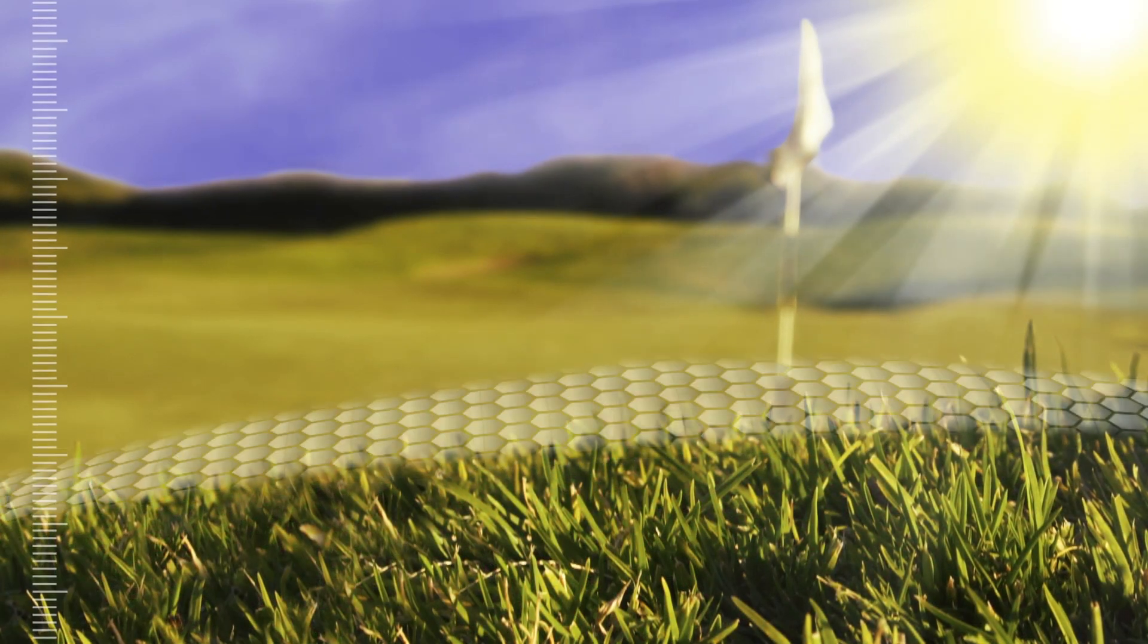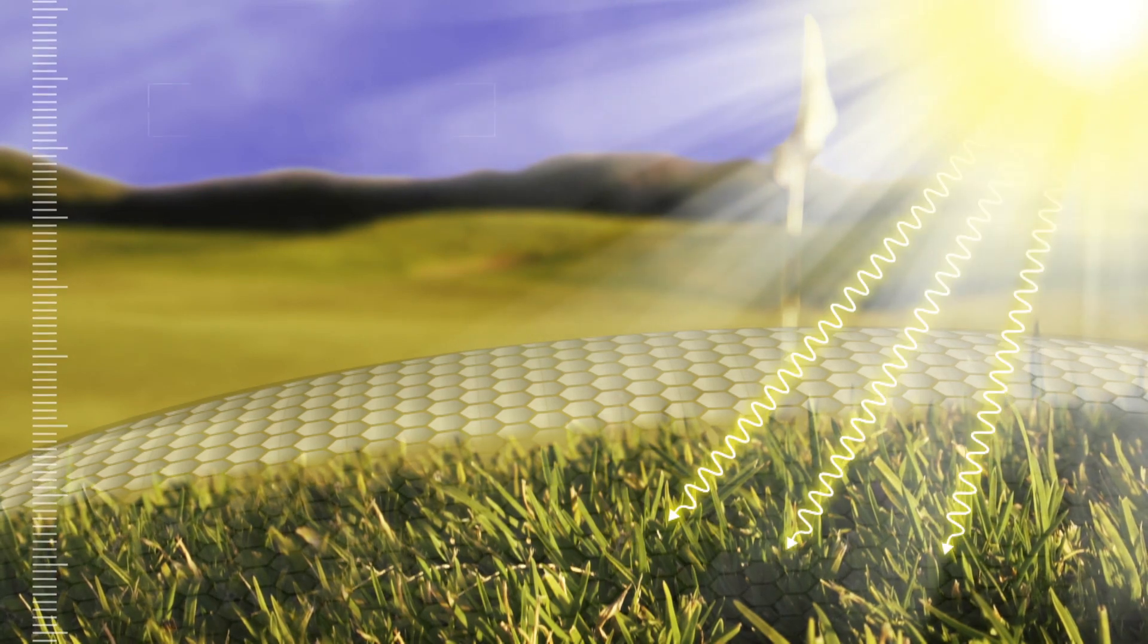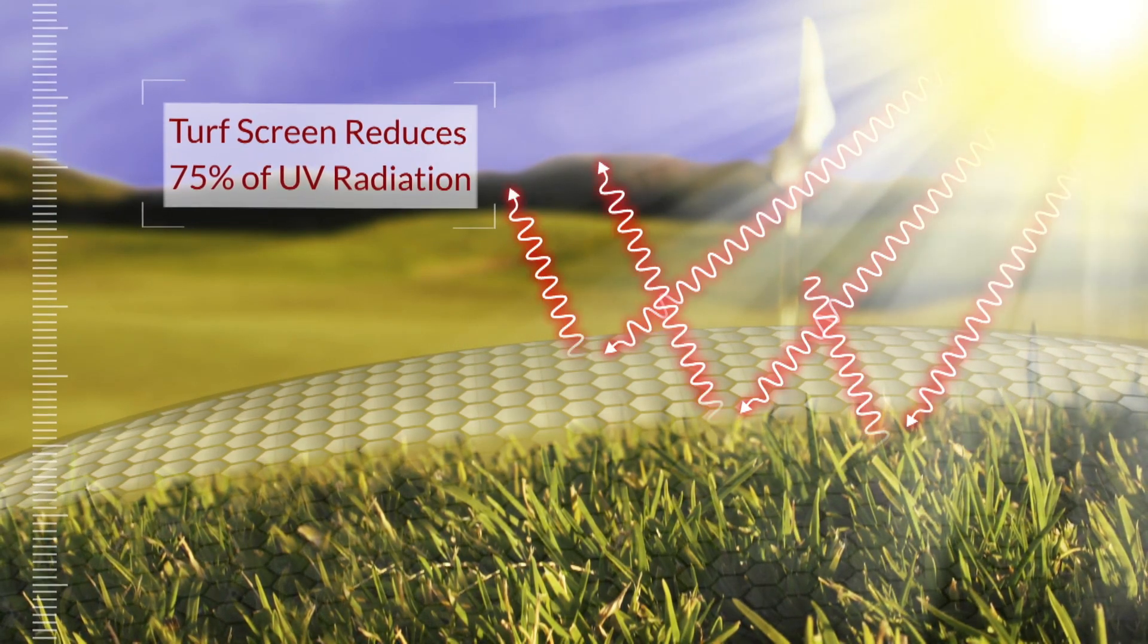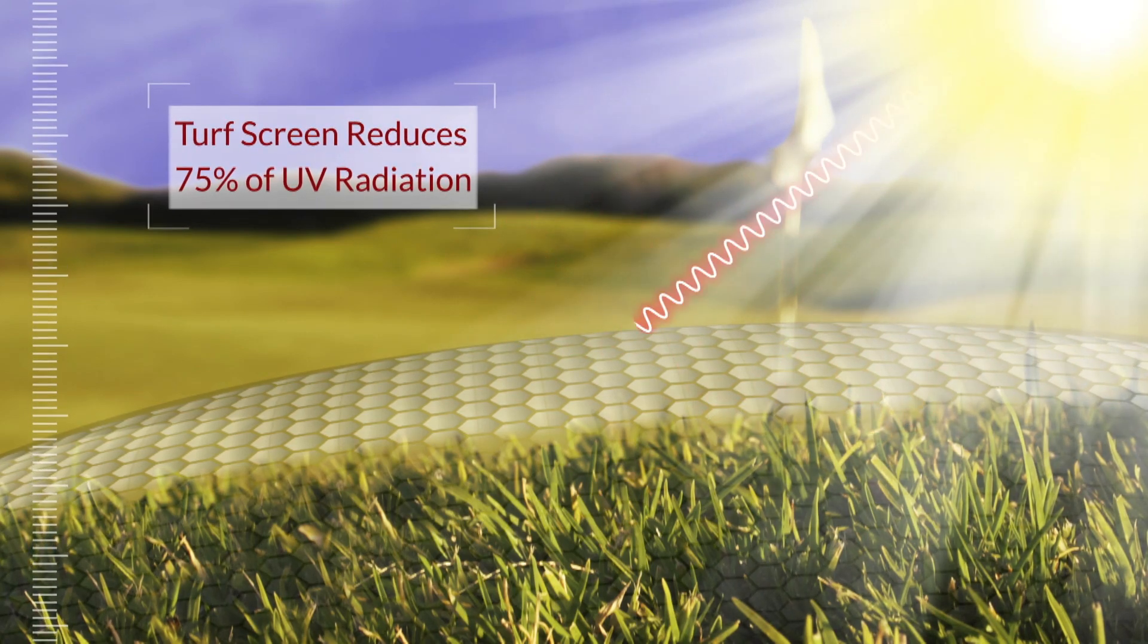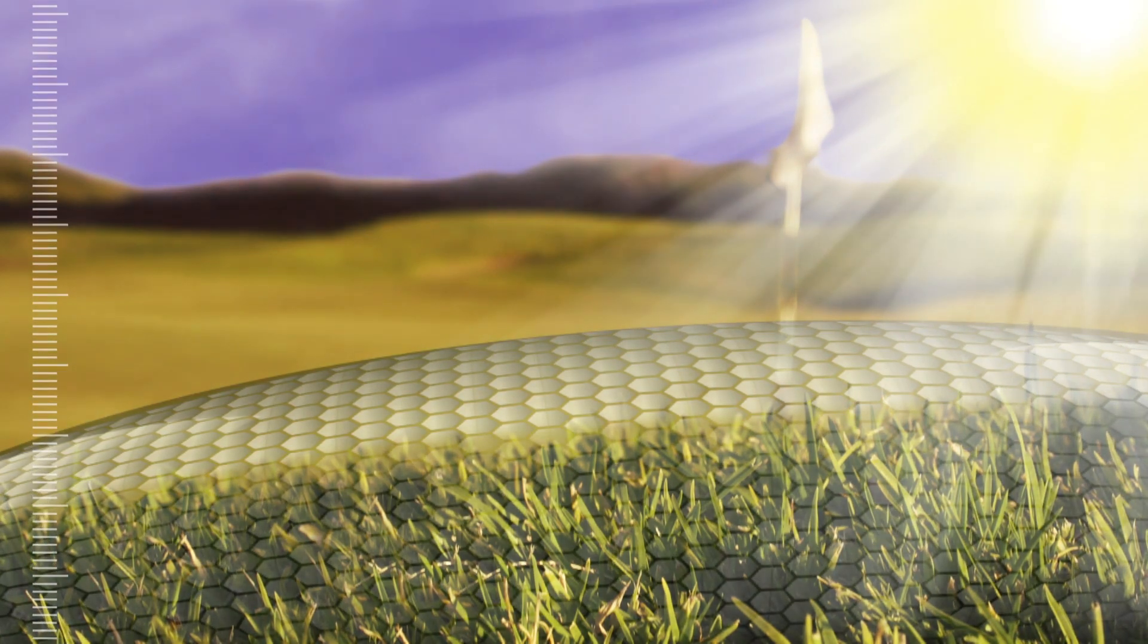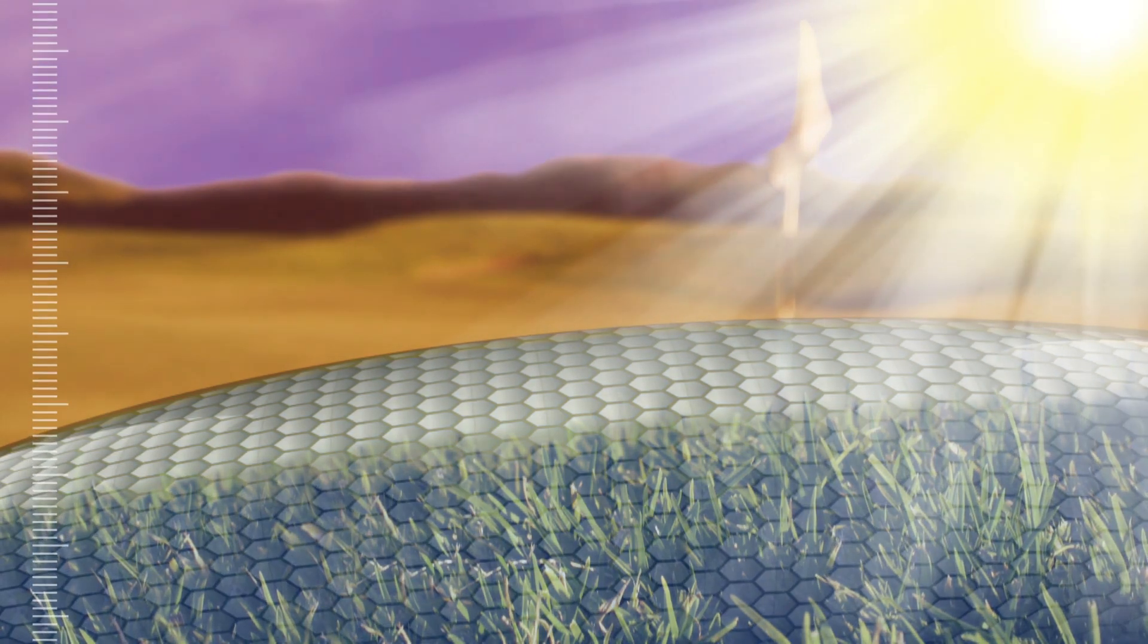While still allowing plenty of visible sunlight to filter through for plant use. That's how TurfScreen reduces over 75 percent of unusable and harmful UV radiation and how TurfScreen reflects heat-producing infrared radiation to keep plants cooler.